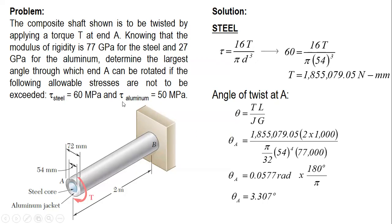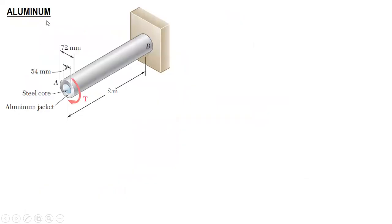Next, we will test the aluminum. We equate the stress of aluminum to 50 MPa. For aluminum, this is the formula for a hollow shaft.